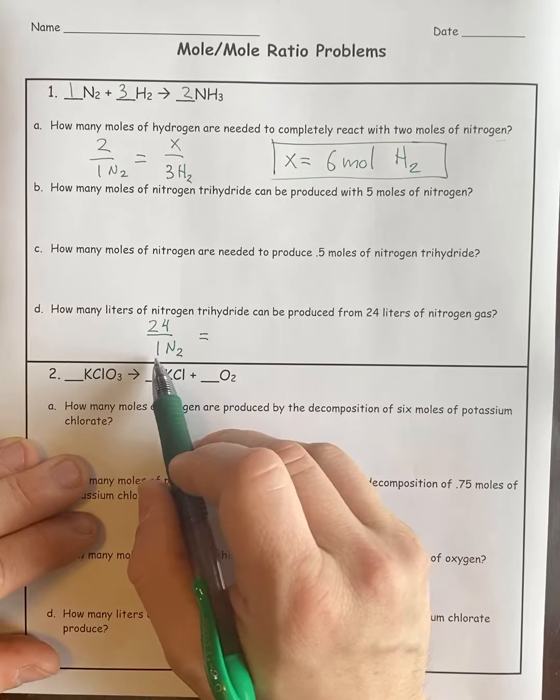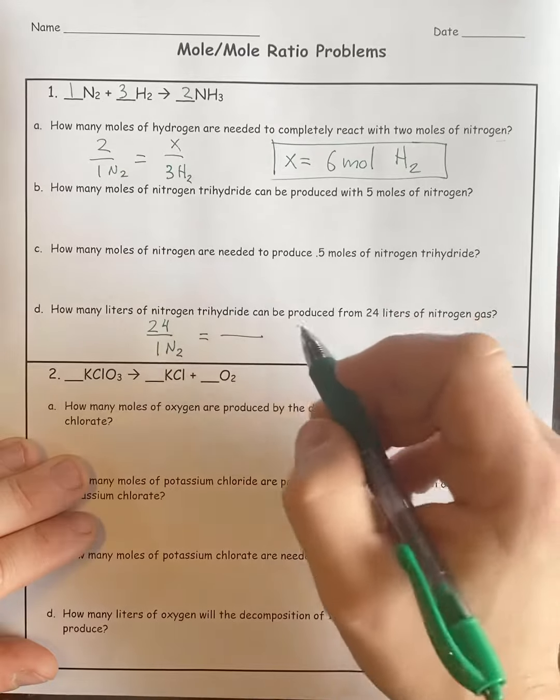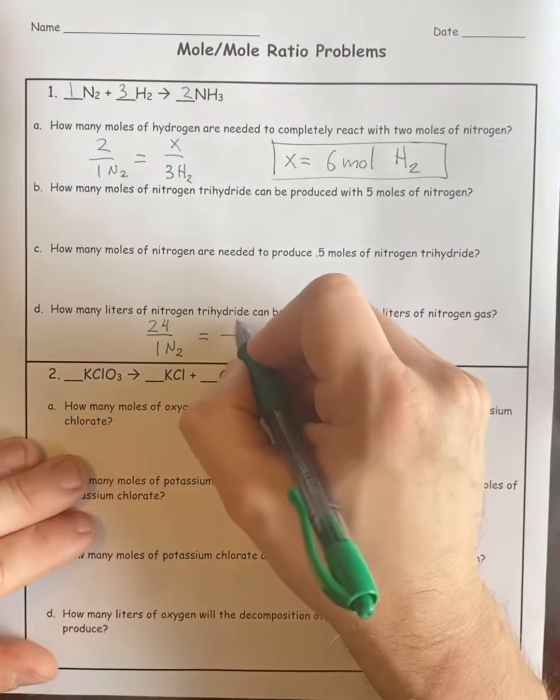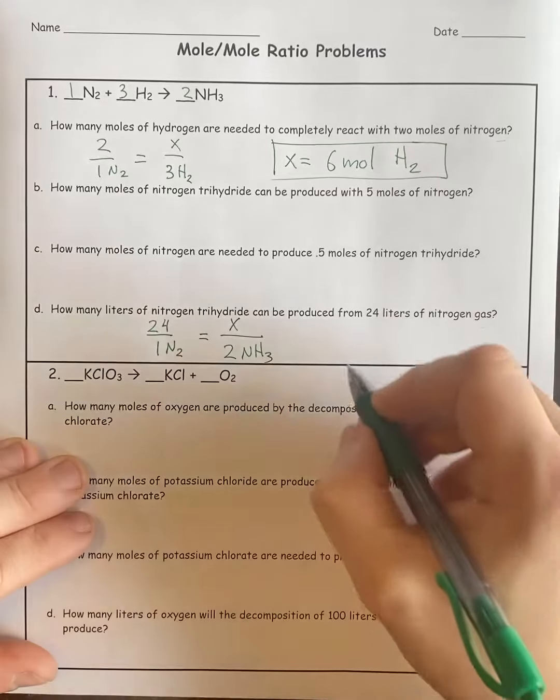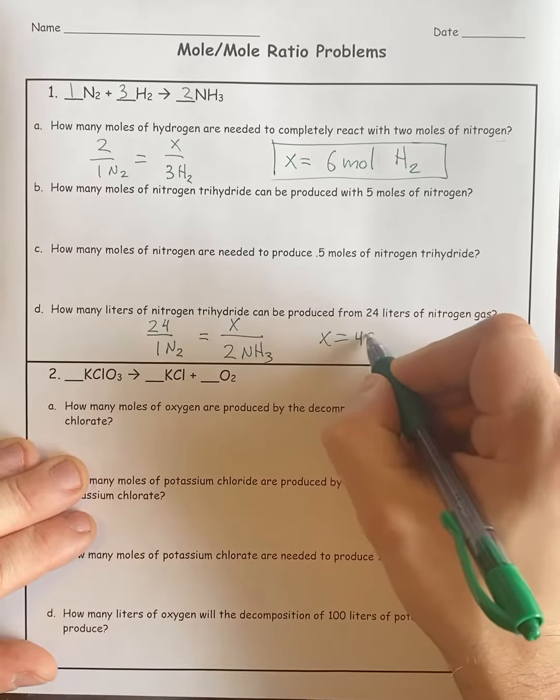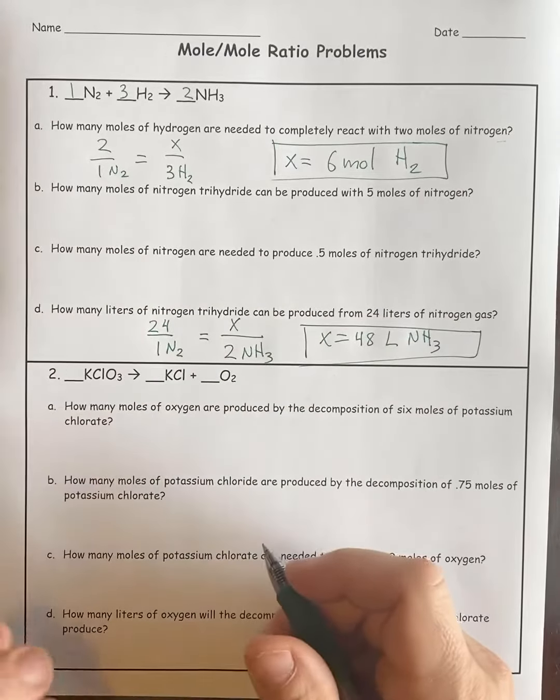I go 24 over 1 nitrogen, and they want nitrogen trihydride, so that would be X over 2 NH3. Cross-multiply, solve for X, and there it is.